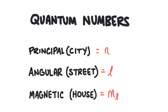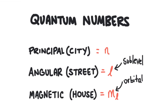Here are the quantum numbers. The principal quantum number, symbol N, is like the city — also known as the principal energy level, similar to the rings on a Bohr diagram. The angular quantum number, symbol L, is like the street — also known as the sub-energy level, or sublevel. The magnetic quantum number, symbol M sub L, is like the house — also known as the orbital. So orbitals are the name for an electron's house. Electron houses are regions of probability, like a cloud of where you'd expect to find the electrons, and they have really funny shapes.